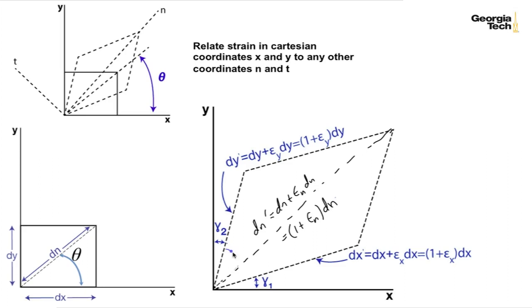And remember now, this angle here is going to be equal to pi over 2 minus gamma 1 and gamma 2 or gamma xy. So this angle is pi over 2 minus gamma xy. Okay, so that's what our deformed parallel piped looks like.